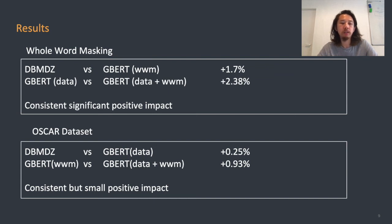When looking at the OSCAR dataset, DBMDZ is improved upon by GBERT data by a quarter of a percent. And GBERT whole-word masking is improved upon by GBERT data plus whole-word masking by 0.93%. The OSCAR dataset gives a consistent positive impact, but a comparatively small one.